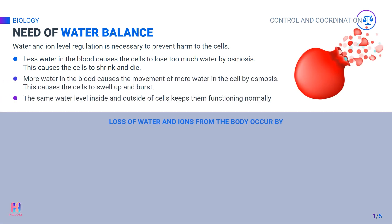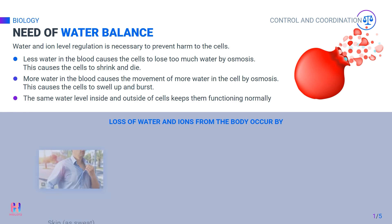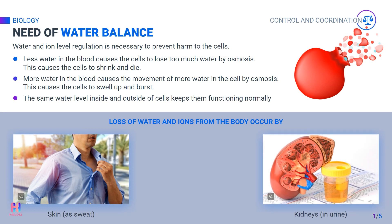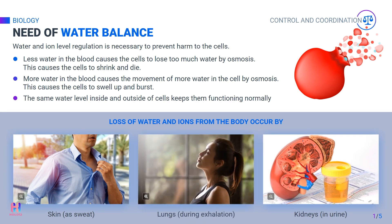Loss of water and ions takes place in the form of sweat from the skin, kidneys, and during exhalation from the lungs. Excretion from the skin and lungs cannot be controlled, but the kidneys can control the excretion of water through urine and thus help to regulate the level of water and ions in the body.